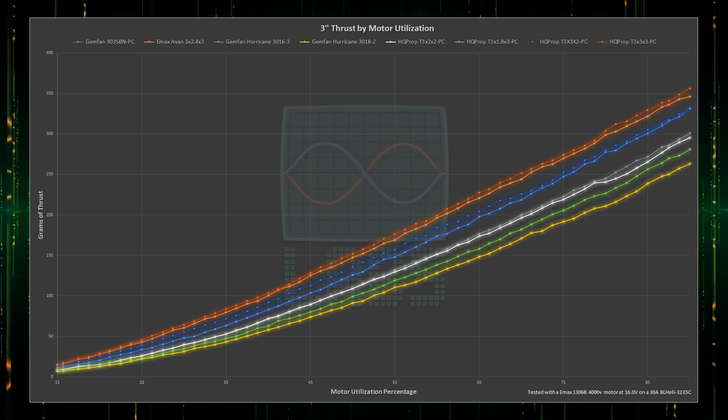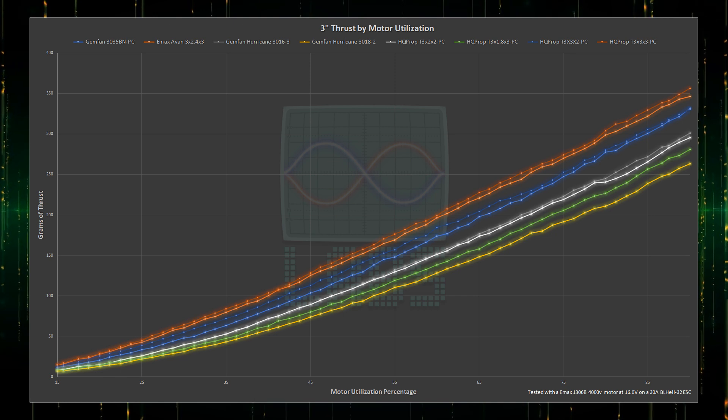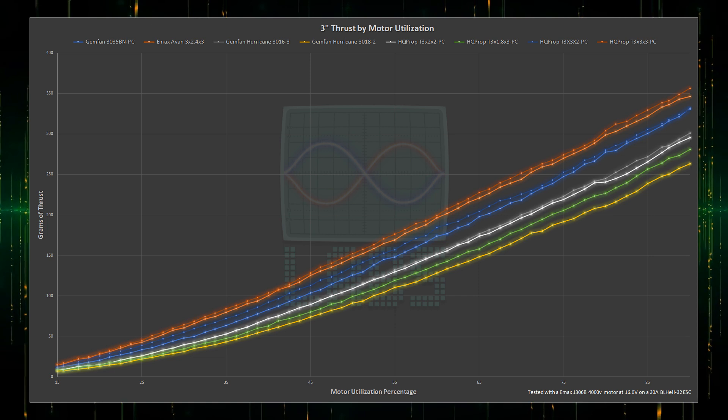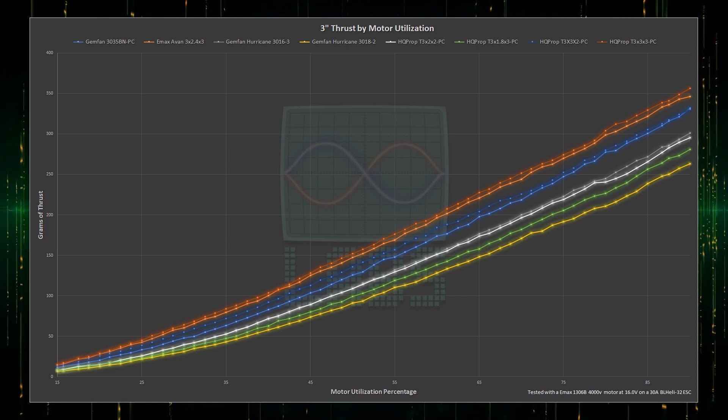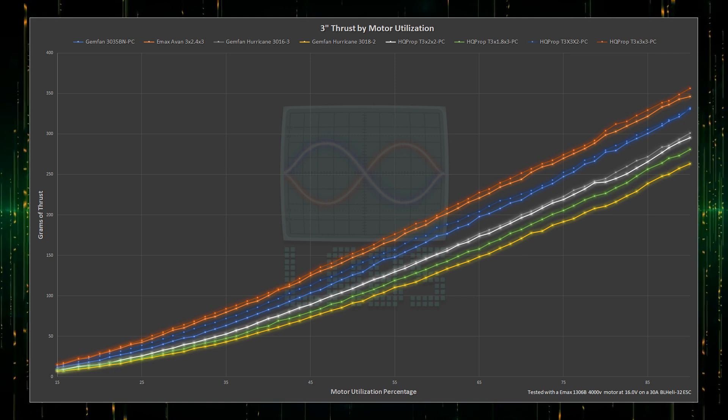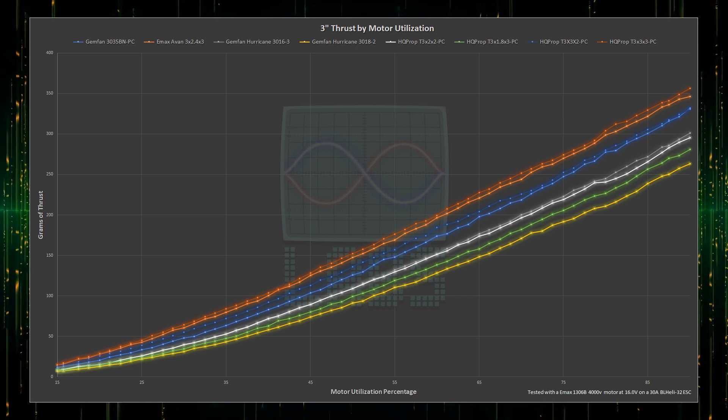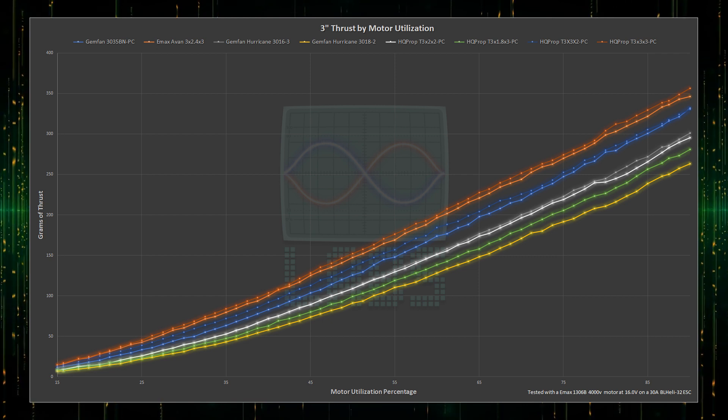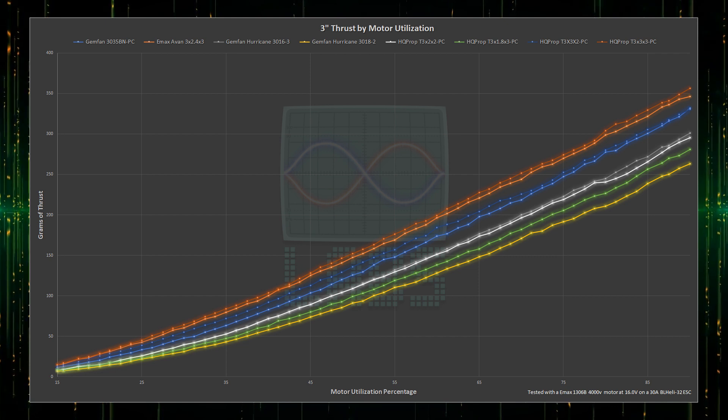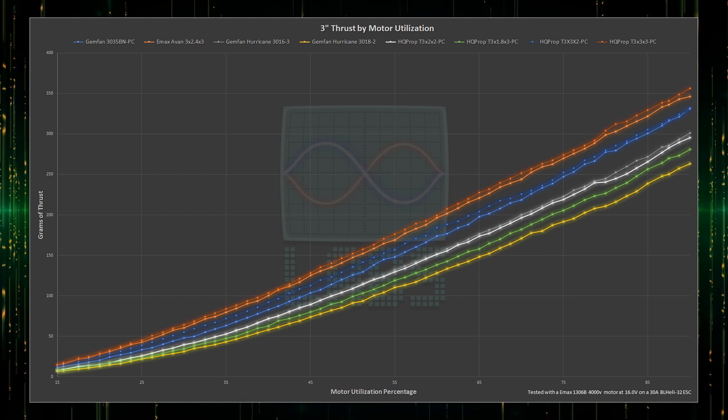Let's start with thrust by showing the raw thrust output of each propeller through the throttle range. For thrust output the HQ Prop 3-blade 3-inch pitch propeller takes the lead across all RPMs, followed closely behind by the Emax AVAN 3-blade 2.4-inch pitch propeller. Lower down the 2-blade 3-inch pitch HQ prop propeller surprisingly gives a clear amount of additional thrust just over the Gemfan 3-blade 3.5-inch pitch propeller. Below them the 2-blade 2-inch pitch HQ prop propeller are neck and neck with the Gemfan Hurricane 3-blade 1.6-inch pitch propeller. The heads-up 3-blade 1.8-inch pitch propeller gives a disappointing amount of thrust comparatively but all of these propellers can both redeem themselves or become non-competitive when battling over efficiency.